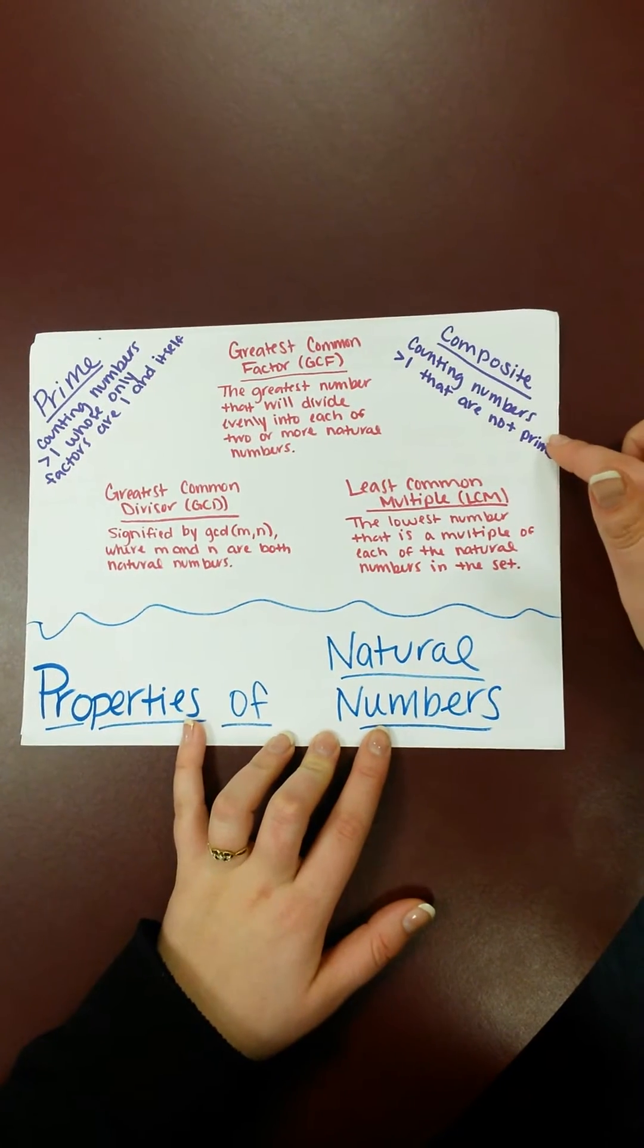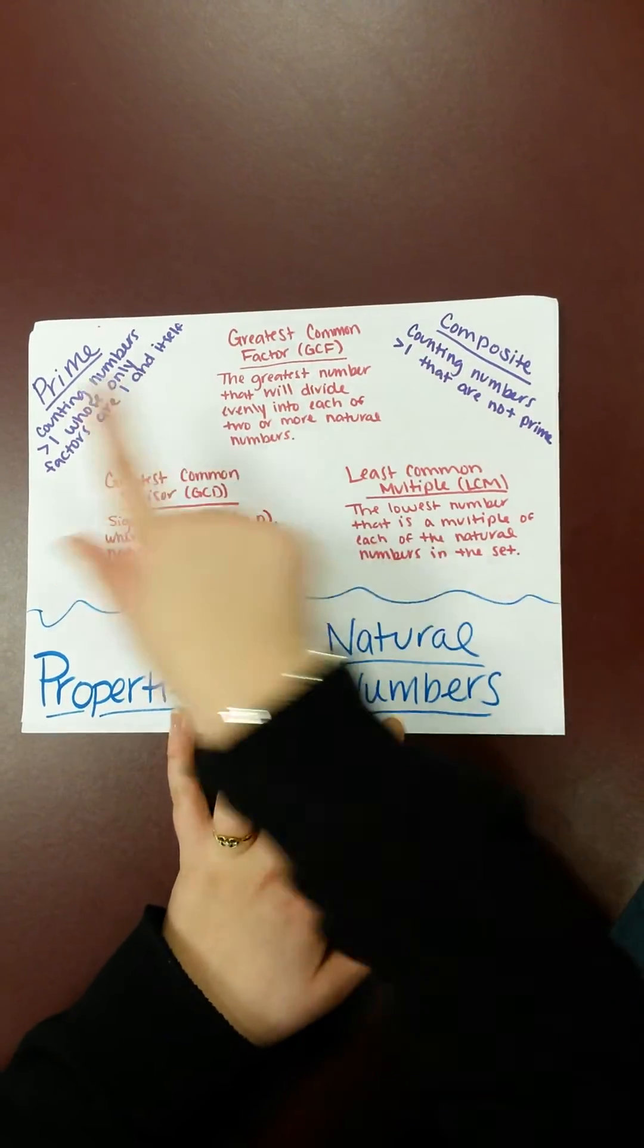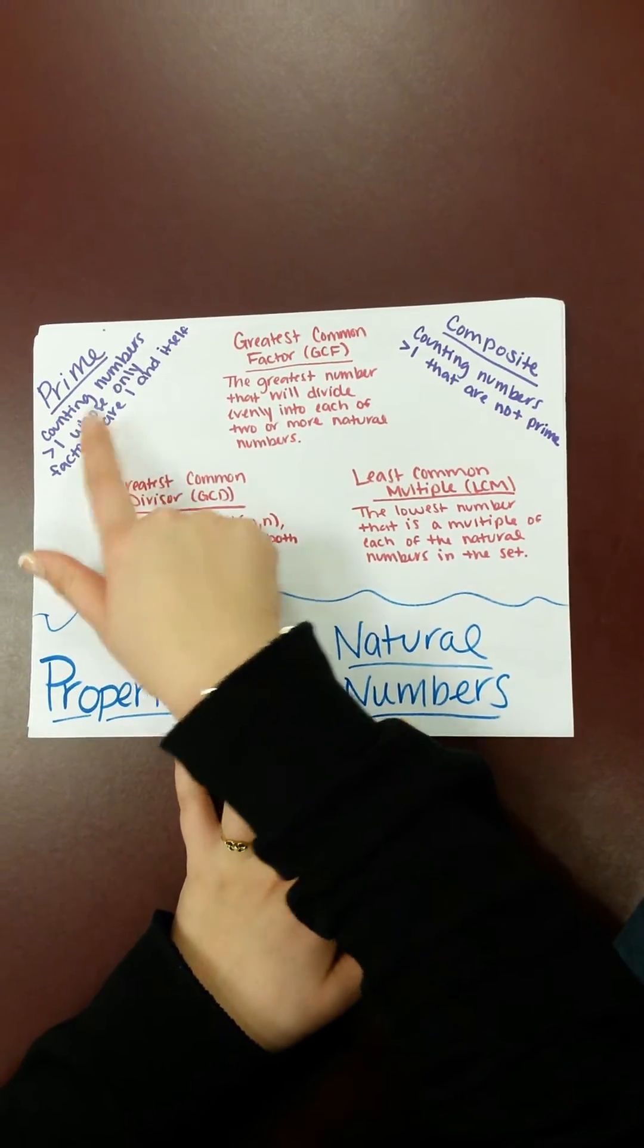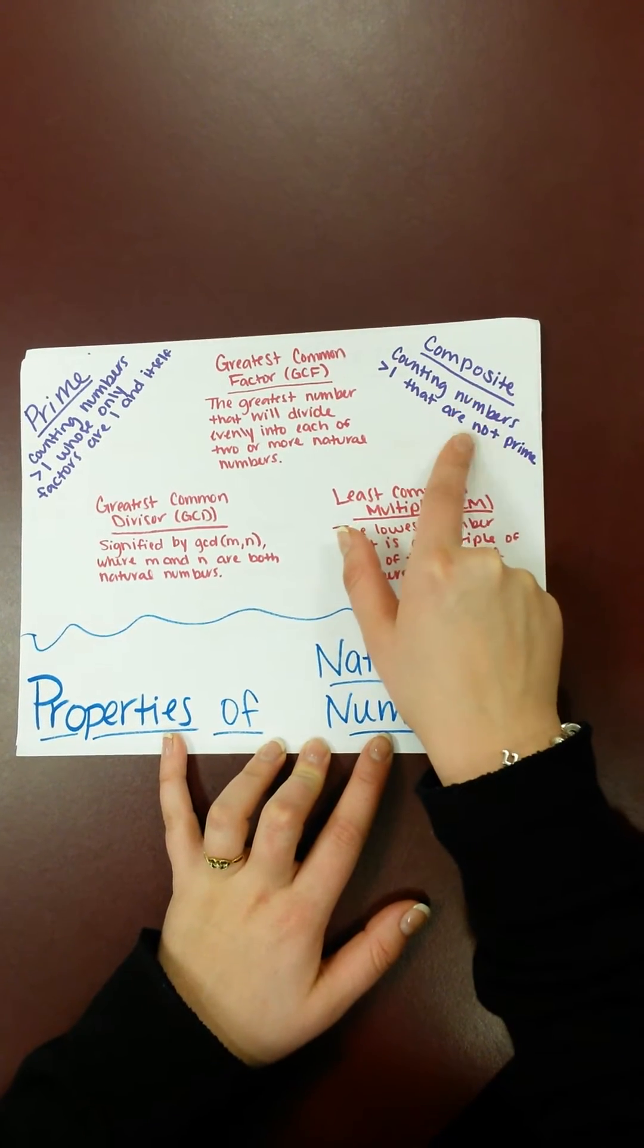So then composite numbers, and they're counting numbers greater than 1 that are not prime. So these two are opposites of each other. So any number that's not prime is going to be composite. And these are all even numbers plus some odd numbers.